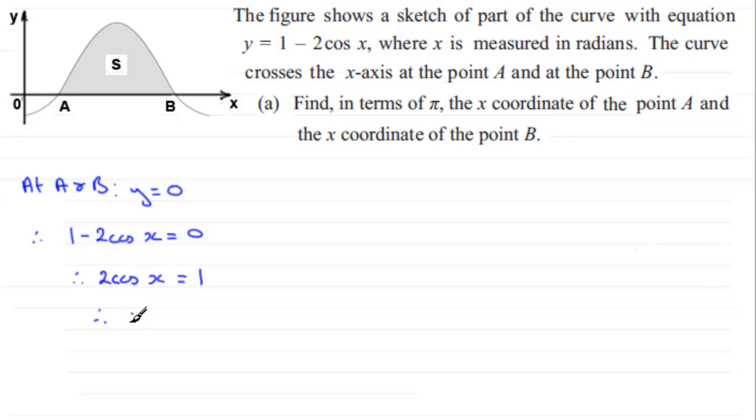And if we divide by 2, cos x equals 1/2. And to get x, we take the inverse cosine of both sides. Now, we've got to work in radians, so we need to make sure that the calculator is in radians mode.